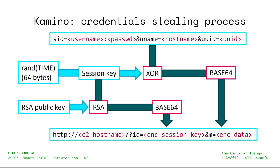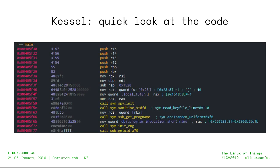Here is a description of the credentials stealing process. Each time someone logs in to the infected host, the credentials are sent to the C&C through an HTTP request. As mentioned before, the data is XOR encrypted, and the key used for the encryption process is also RSA encrypted. That's all for Camino.